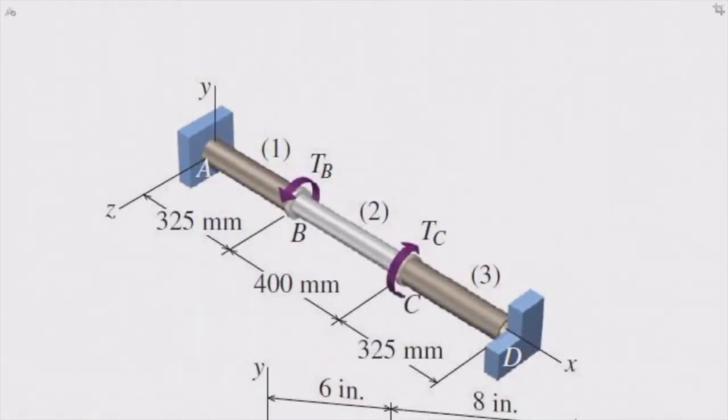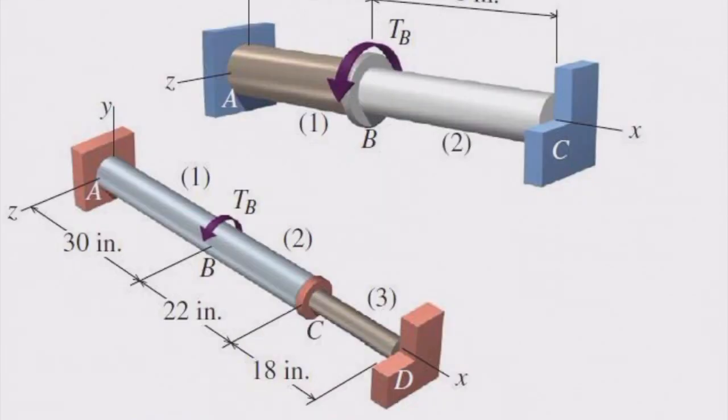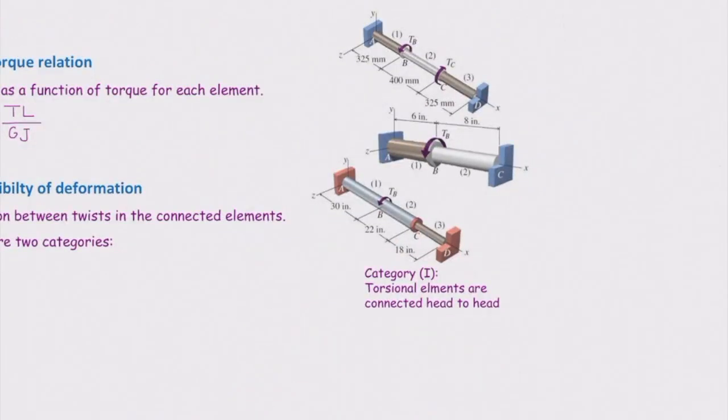What would be the compatibility equation for this figure? Here we have three elements. So phi 1 plus phi 2 plus phi 3 equals zero. The same is true for the bottom figure. Here we have two elements, but because the torque in these two elements are different, I will say phi 1 plus phi 2 plus phi 3 equals zero. So this is what we call category number one.